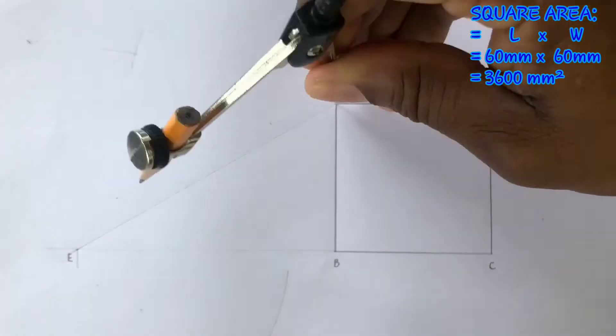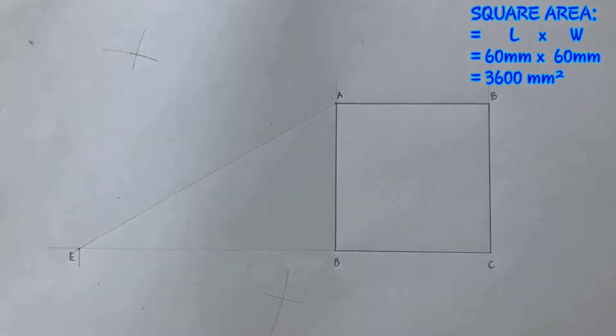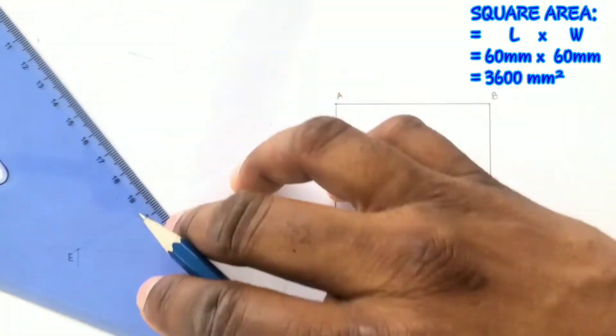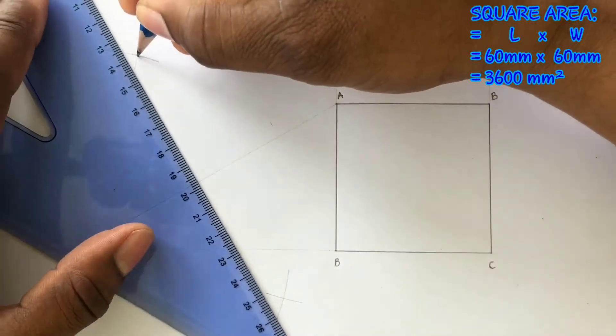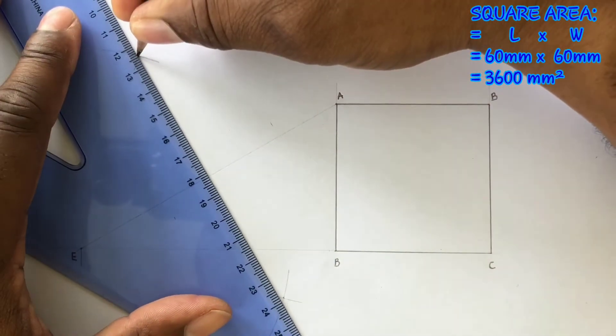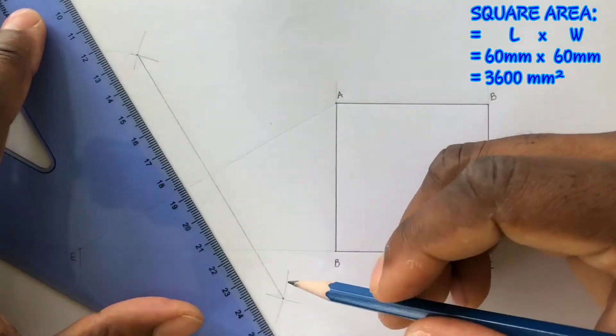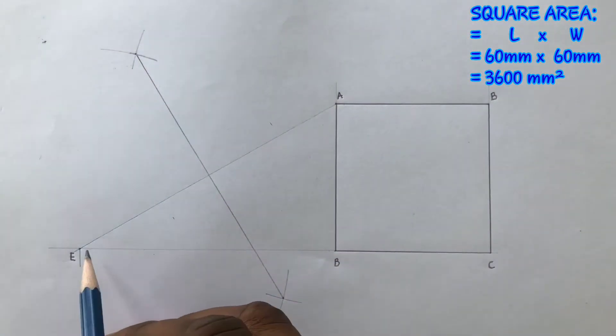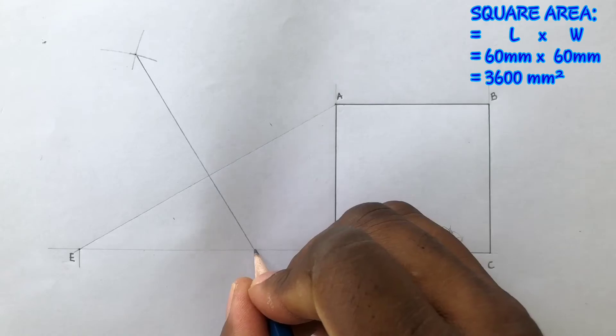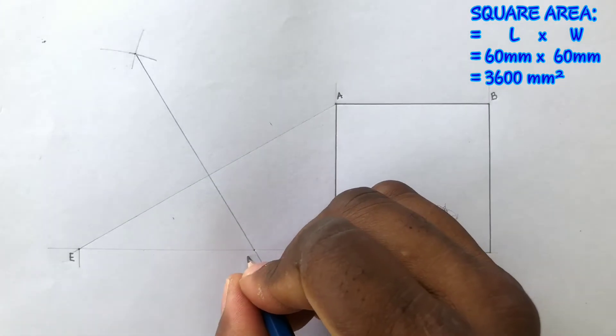Now draw a line to connect both intersections of arcs. This line intersects the EB line giving us point F. Label point F.